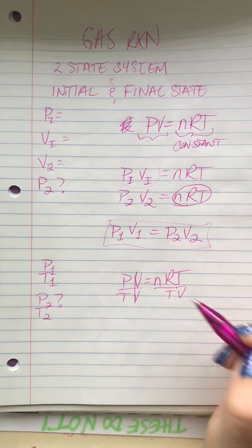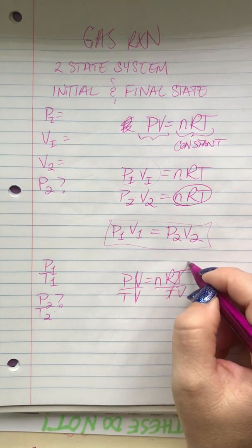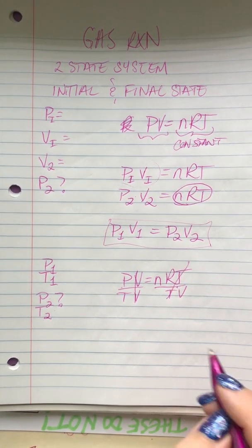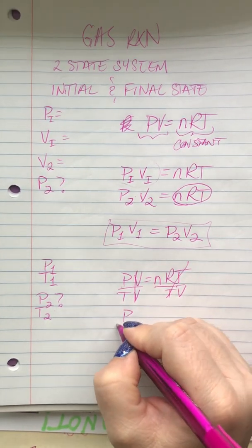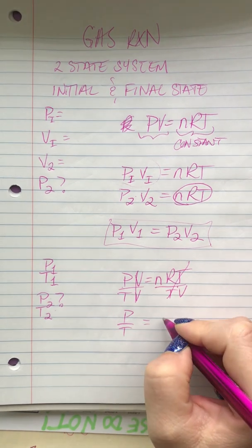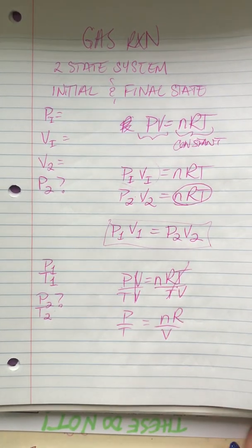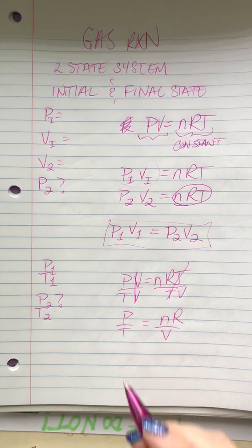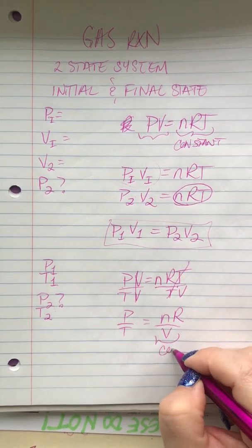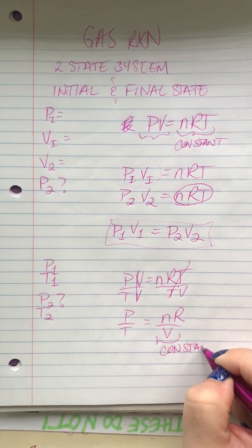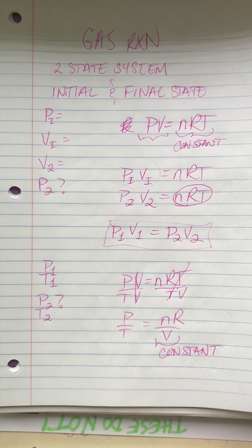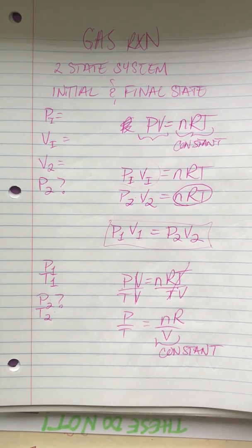So volume will cancel here, temperature cancels here. And what we end up with is P over T equals nR divided by V. Now again, these guys are constant, which means they're not changing from one state to another.